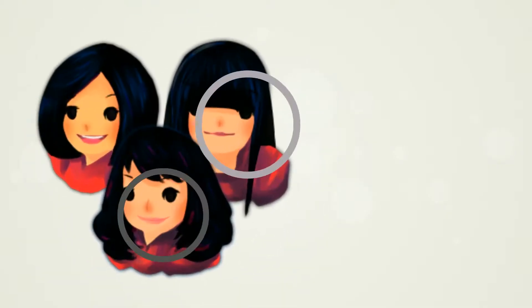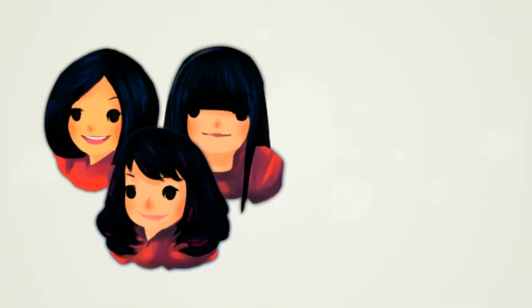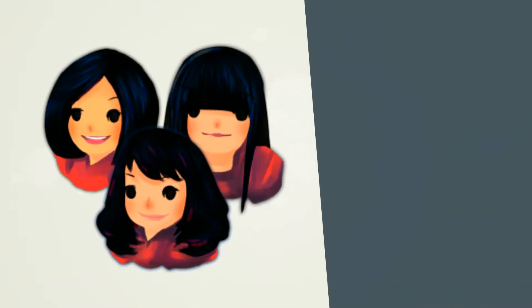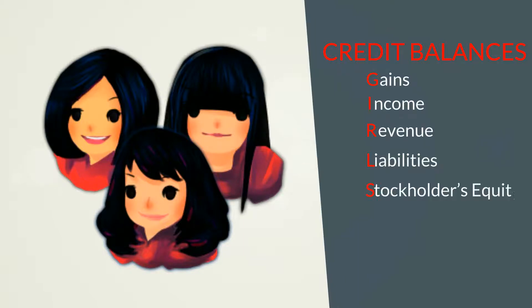The mnemonic GIRLS represents those accounts normally with a credit balance: Gains, Income, Revenue, Liabilities, and Stockholders' Equity.